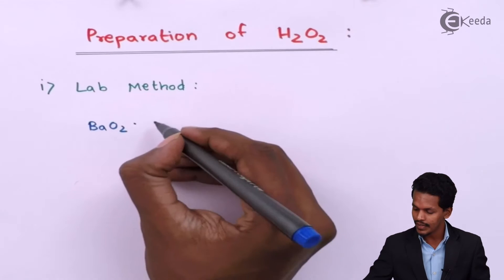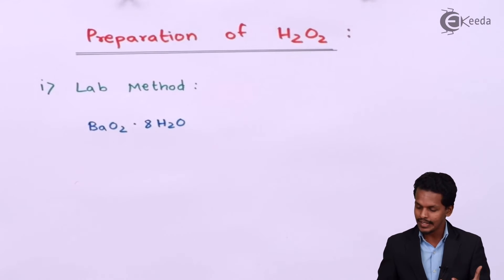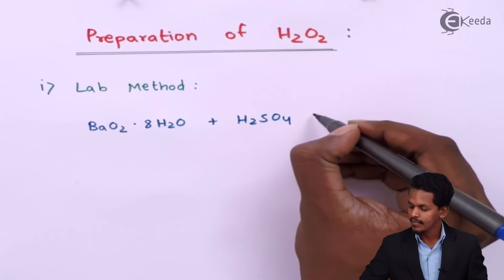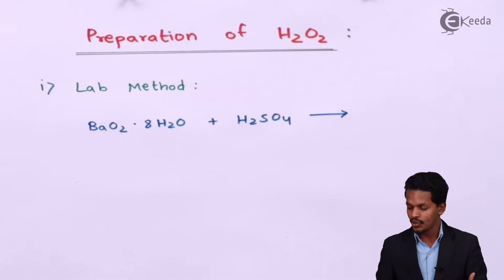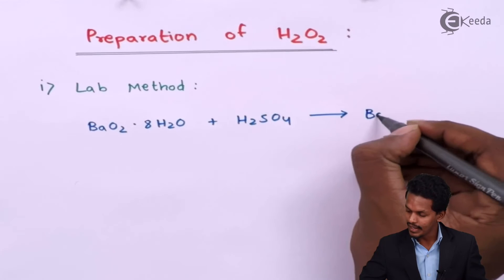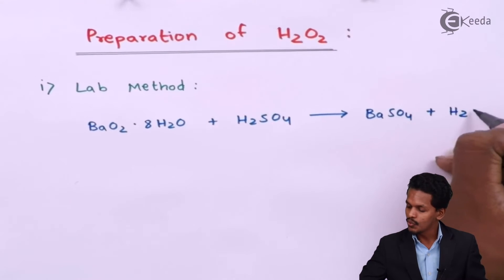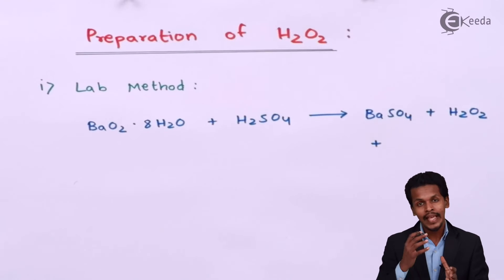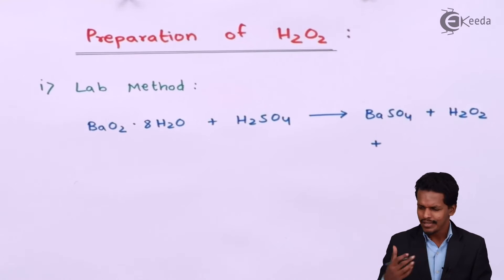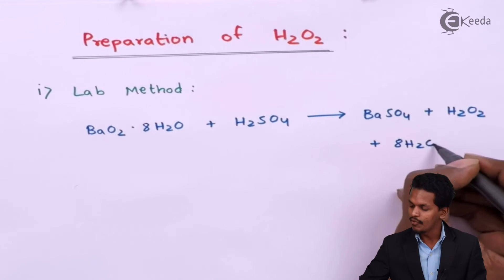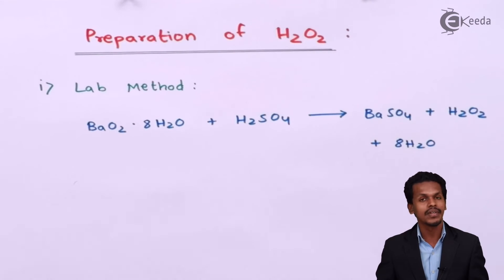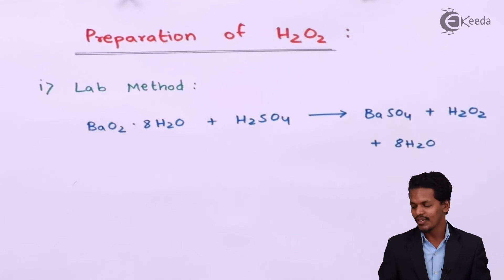We use BaO2 in a crystal form that contains 8 moles of H2O — this is barium peroxide in its hydrated form. This hydrated barium peroxide is treated with H2SO4. Whenever barium peroxide is treated with H2SO4, the products we get are barium sulfate (BaSO4) along with H2O2. Since H2SO4 is a dehydrating agent, it removes most of the water molecules. We obtain BaSO4 along with H2O2 and 8 moles of H2O. Since H2O2 is obtained in a very small amount, this is a lab method and not suitable for large-scale synthesis.